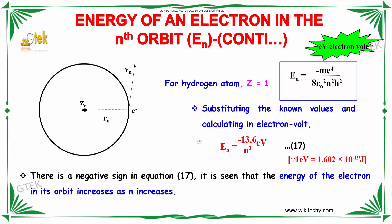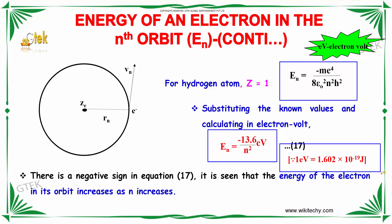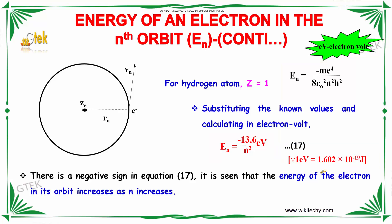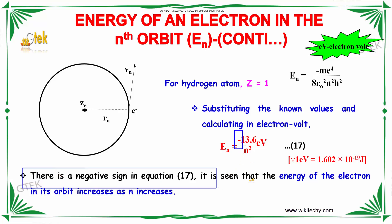Substituting the known values and calculating in electron volts, the total energy is minus 13.6 / n² eV, where 1 electron volt equals 1.602 × 10⁻¹⁹ joules. There is a negative sign in this equation, and it is seen that the energy of the electron in its orbit increases as n increases.